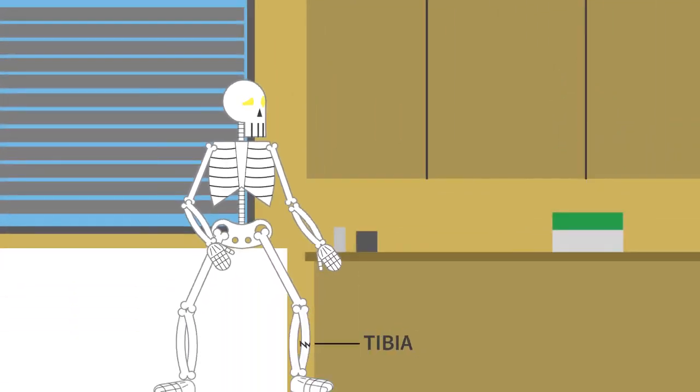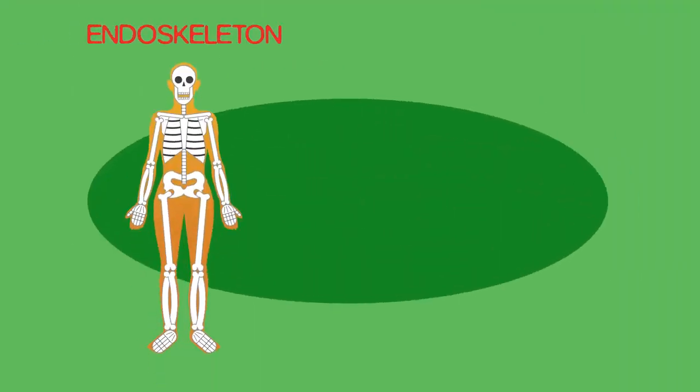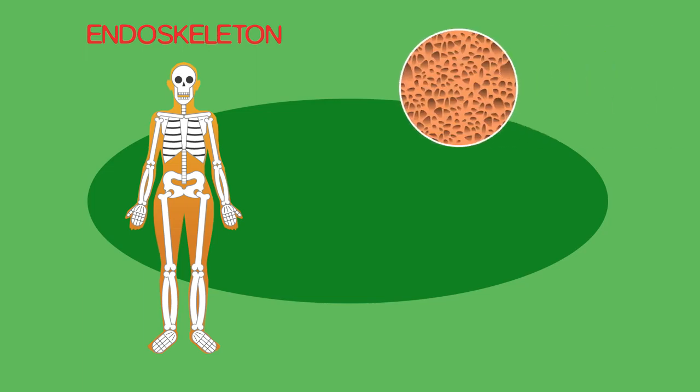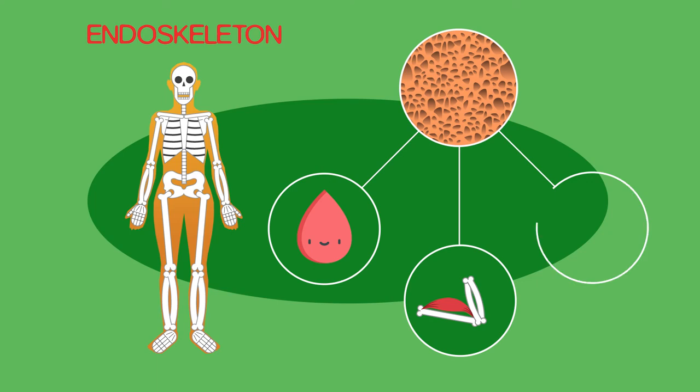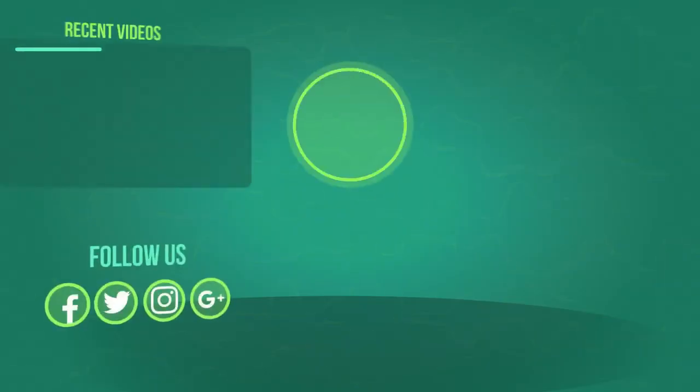So there we have the internal endoskeleton of humans, made up of honeycomb-structured bones that make blood, attach to muscles, and provide all organs with protection. If you like the video, give it a thumbs up and don't forget to subscribe.